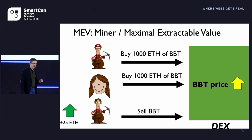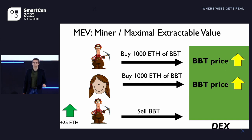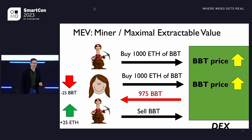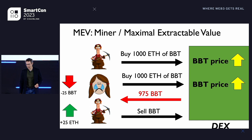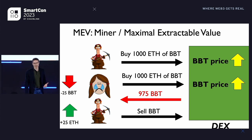Where does this profit come from? The validator's buy transaction, like Alice's, will cause the price of BBT to rise. And consequently, Alice will get worse execution — she will pay a higher price for her BBT and get less BBT in consequence. So essentially, this is money out of her pocket, and this makes Alice very sad. This is the phenomenon referred to as miner or maximal extractable value, and this is the thing that FSS is designed to protect against.